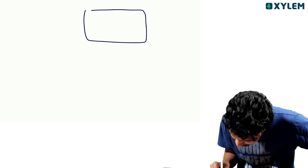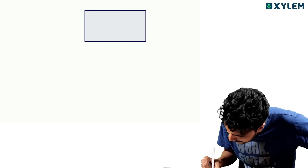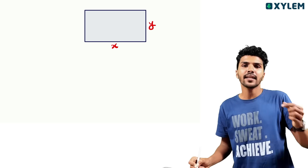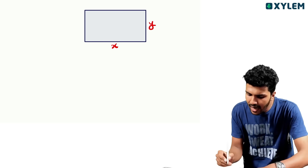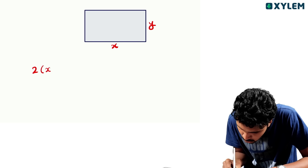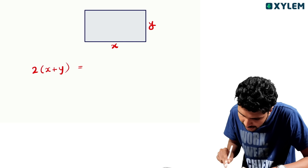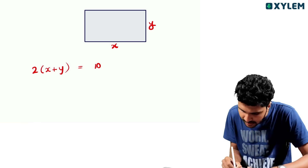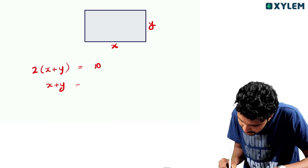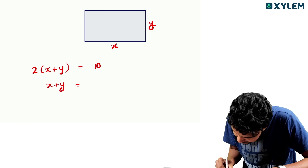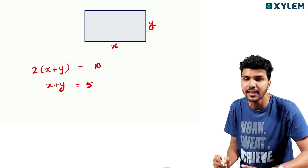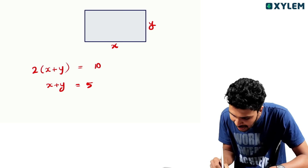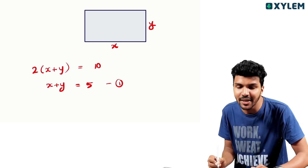Now for the next part: the perimeter is 10. So 2 into x plus y equals 10, which gives x plus y equals 5. The first equation is ready.